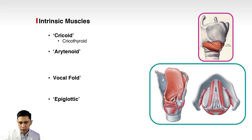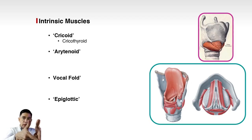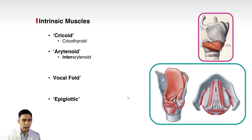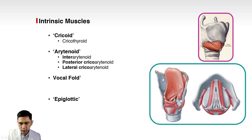The arytenoid group of muscles includes the inter-arytenoid, which connects one arytenoid to the other; the posterior cricoarytenoid, connecting the posterior cricoid to the arytenoid; and the lateral cricoarytenoid, connecting the lateral side of the cricoid to the arytenoid. The arytenoids look like two thumbs and are found at the back of the vocal fold. They essentially open or close the vocal fold.